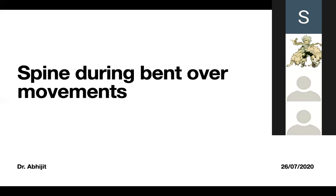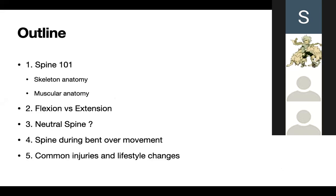Today we are going to discuss the spine's position during a bent-over movement. In the outline we will talk about what exactly a spine is — its skeletal anatomy, its muscular anatomy, what exactly is flexion and extension of the spine, how we maintain a neutral spine, the spine's position during a bent-over movement, and the most common injuries that happen if we do not maintain a neutral spine during a bent-over movement when there is loading on the spine.